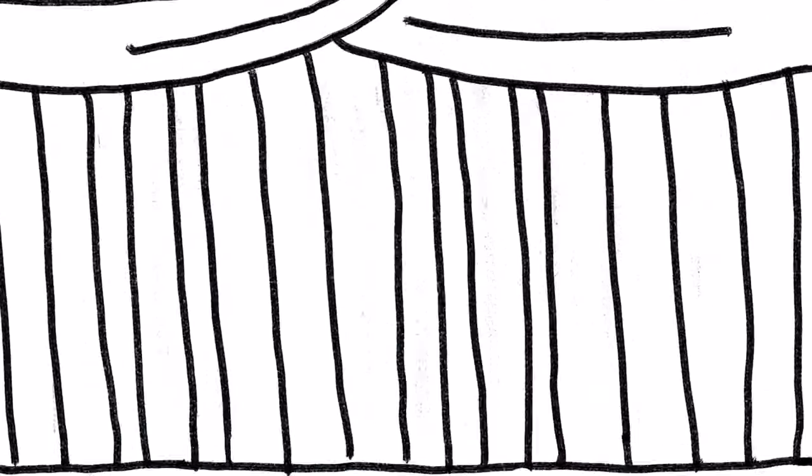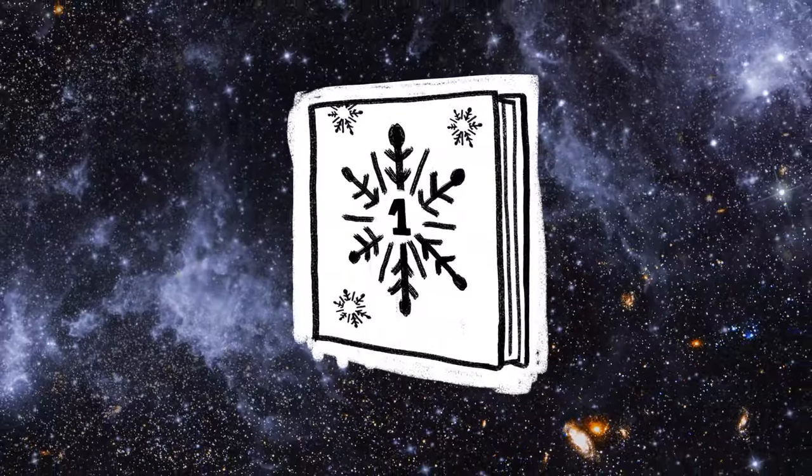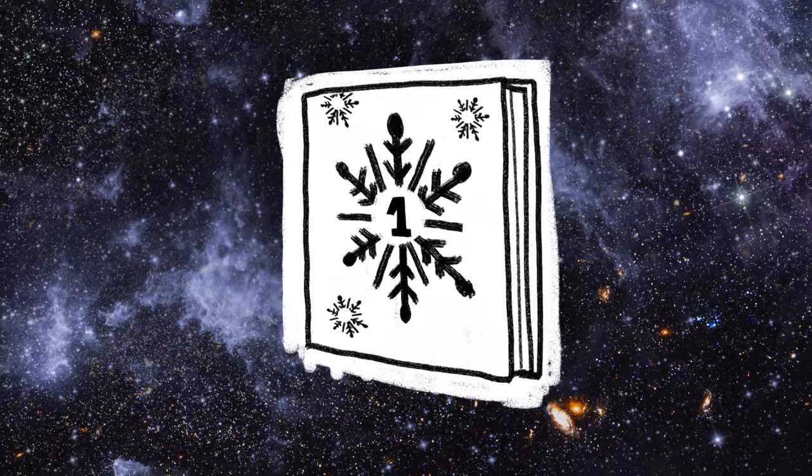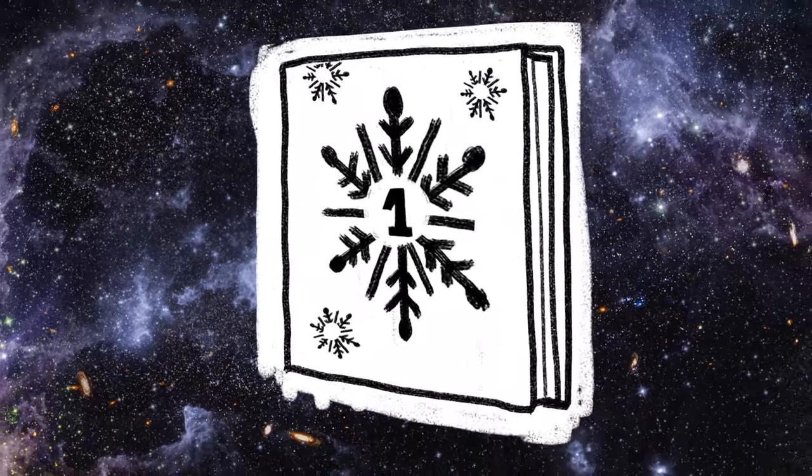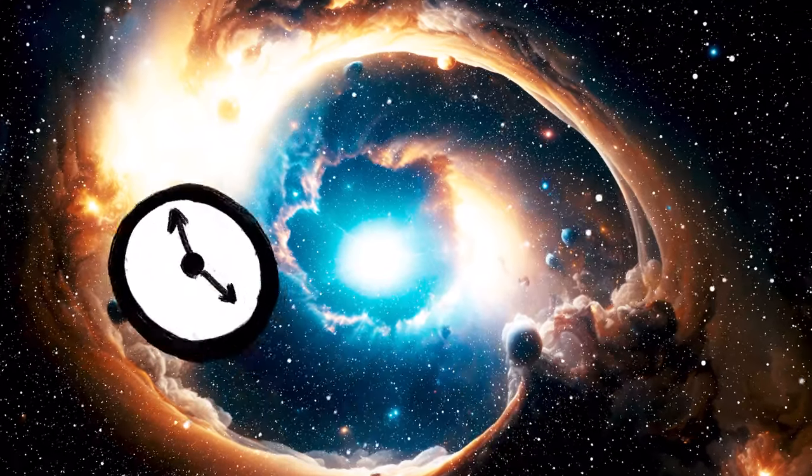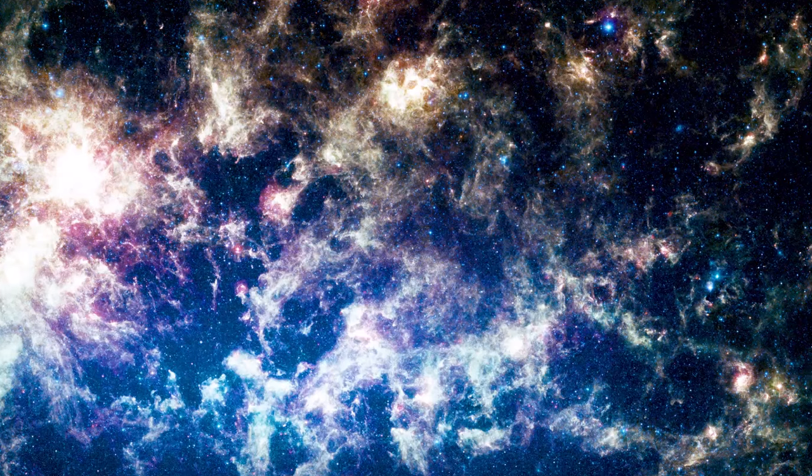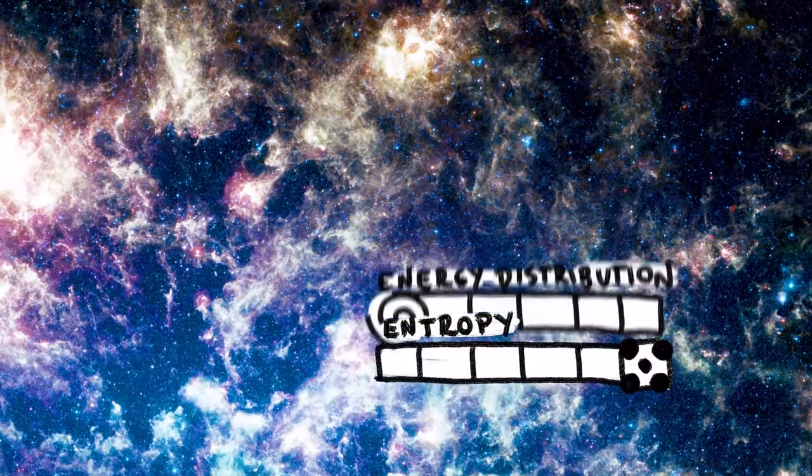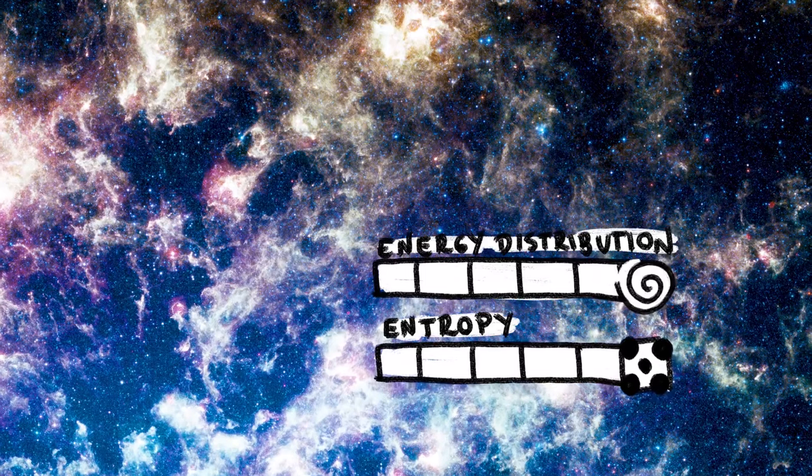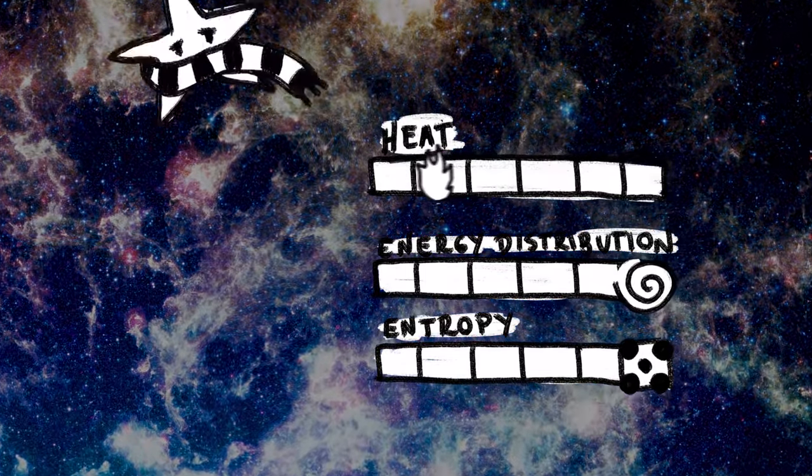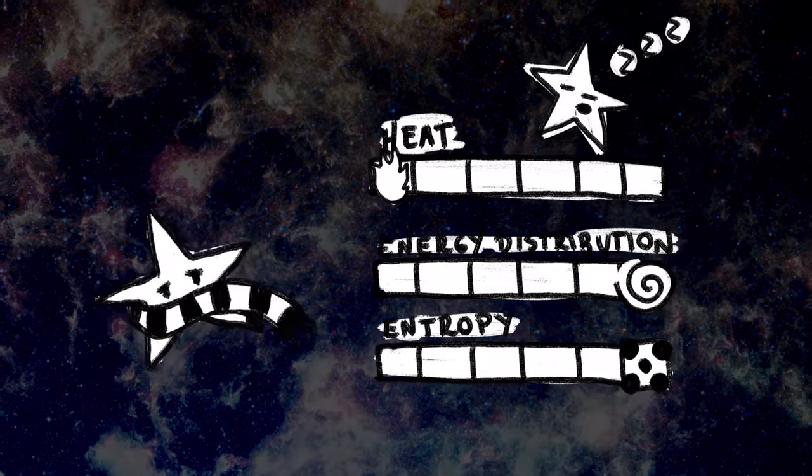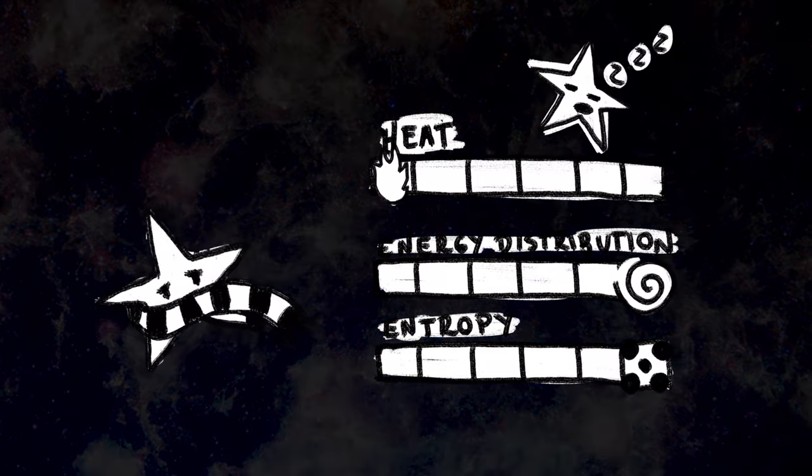Here are a few scenarios based on current scientific understanding. Heat death or the big freeze. This is the most widely accepted scenario based on the second law of thermodynamics. Over trillions of years, it's theorized that the universe will reach a state of maximum entropy, where all energy is evenly distributed and no work can be performed. The universe would be cold and dead, with all stars burned out, and every bit of energy spread out thinly across an ever-expanding cosmos.